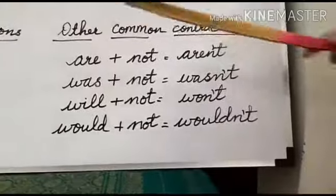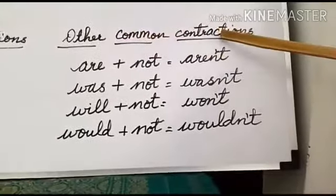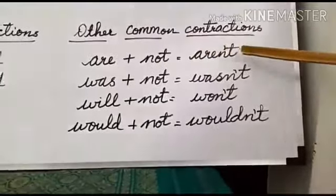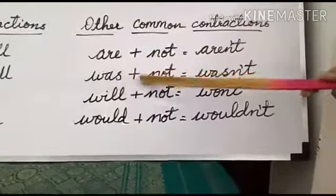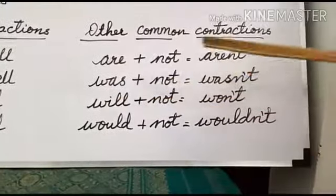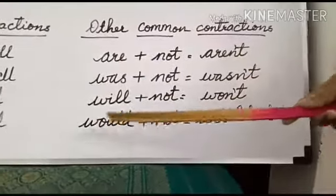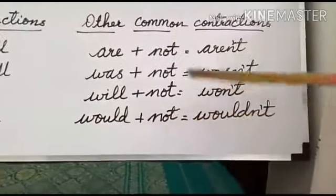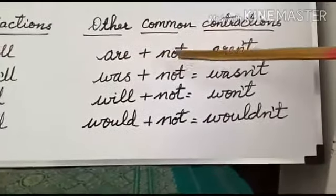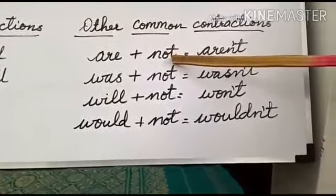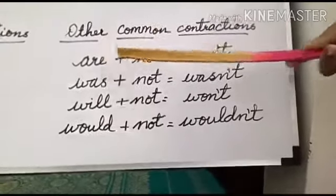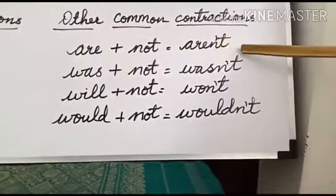Some other common contractions are: 'are' plus 'not' = 'aren't', 'was' plus 'not' = 'wasn't', 'will' plus 'not' = 'won't', 'were' plus 'not' = 'weren't', 'would' plus 'not' = 'wouldn't'. In these words, the letter 'o' is removed and in that place an apostrophe is placed, and the contracted words are formed.